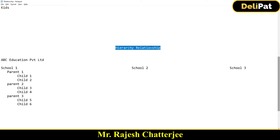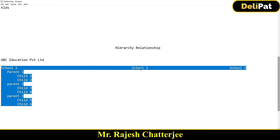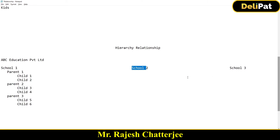The business chose the Account object to store all customer data. For example, they had School 1, School 2, and School 3. Under School 1: Parent 1, Parent 2, Parent 3. Under Parent 1: Child 1 and Child 2. Under Parent 2: Child 3 and Child 4. Under Parent 3: Child 5 and Child 6. The same hierarchy repeats for School 2 and School 3. The end goal is to store all school, parent, and child data inside the same Account object.